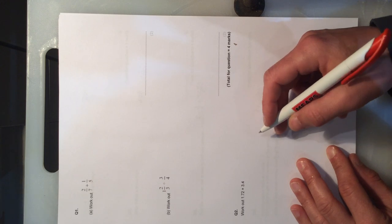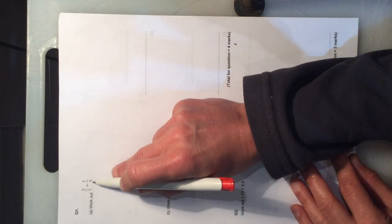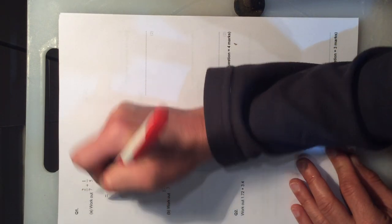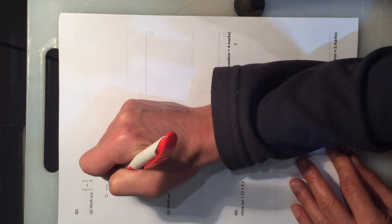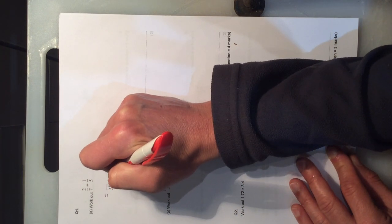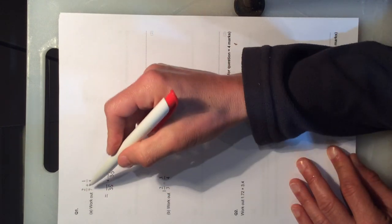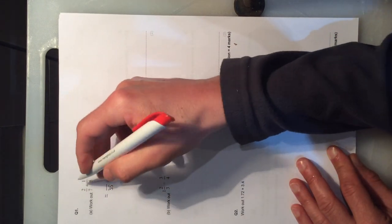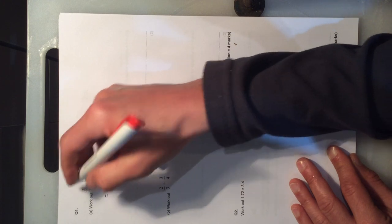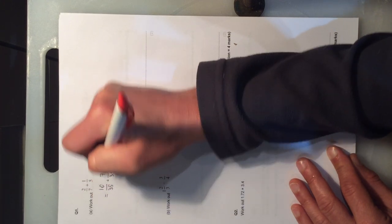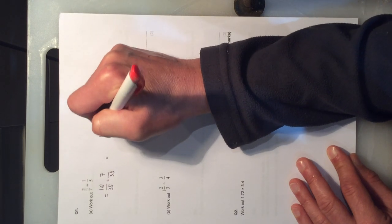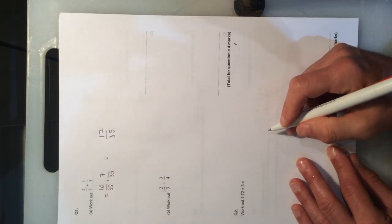The first question is an adding fractions question. We need a common denominator. I'm going to choose from 7 and 5. The lowest common denominator is 35. I'm going to convert both of these into fractions of 35 as the denominator, multiply by 5, multiply by 5, multiply by 7, multiply by 7, to give yourself the final answer of 17 out of 35.